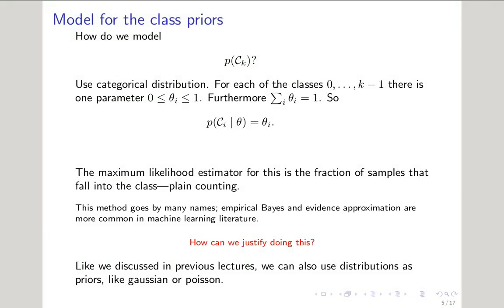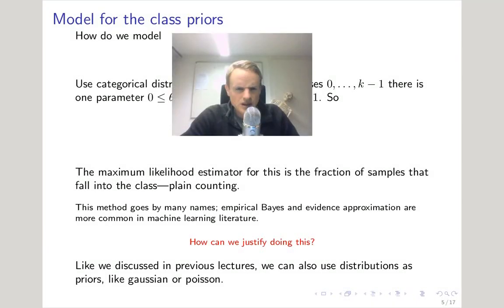One simple approach to get these probabilities is to use the maximum likelihood estimator. In this case, it just happens to be the number of samples in our data that belong to that class divided by the total number of samples. In other words, we just count things up. This simple method goes by a couple of different names in the literature with empirical Bayes and evidence approximation being the more commonly found. So how can you justify doing this?